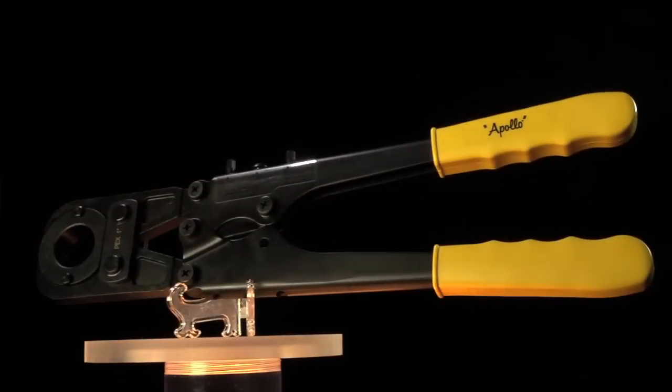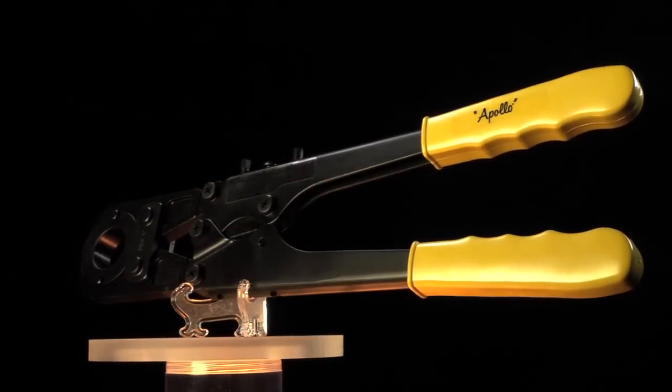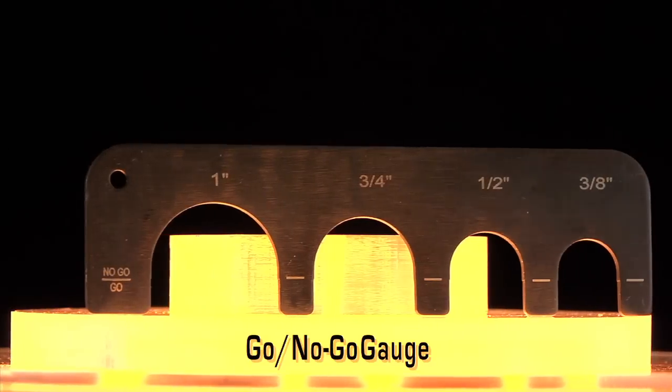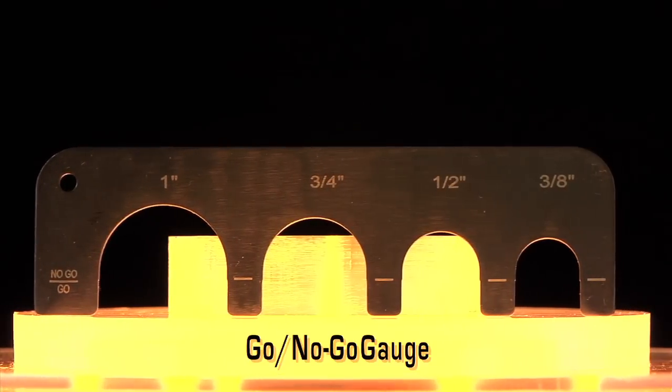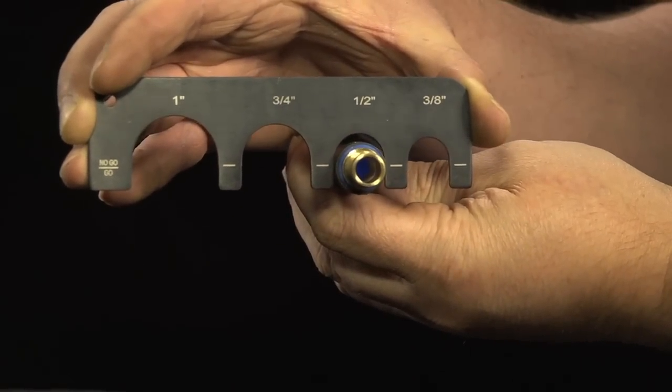Use the Apollo PEX crimp tool to crimp the ring around the tubing and fitting. Test the crimp with the Apollo GO/NO-GO gauge to ensure a proper seal.